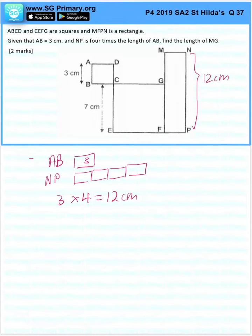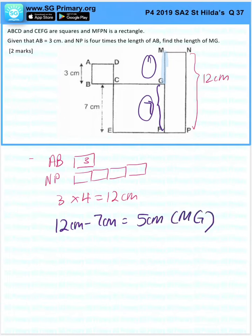Find the length of MG. We want this length. We know that CEFG is a square, so this is 7 cm. So 7 plus this one here will give me 12. So 12 minus 7 is 5 cm which is the length of MG.